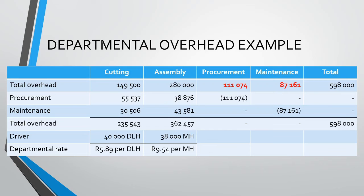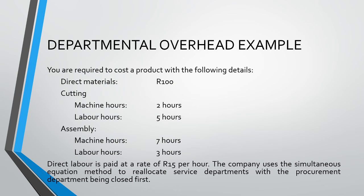Notice importantly that the overhead absorption rates generated by the simultaneous equation method are identical to those obtained under the repeated distribution method. Let us finish off our example by costing the product as we were initially required to do. Our basic format is direct material cost plus direct labor cost to give us our prime cost. We then add our variable and fixed overheads to arrive at our total cost. In this example, we do not have variable overheads. Because the overhead absorption rates are identical to those obtained under the repeated distribution method, the valuation of the product will be identical as well.